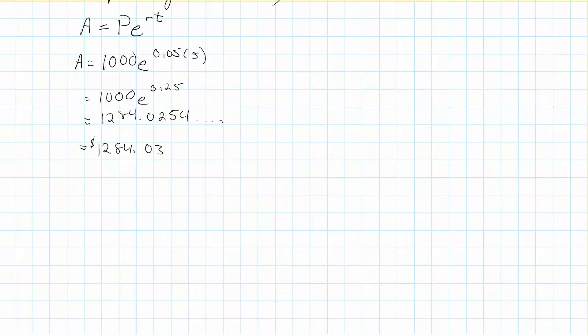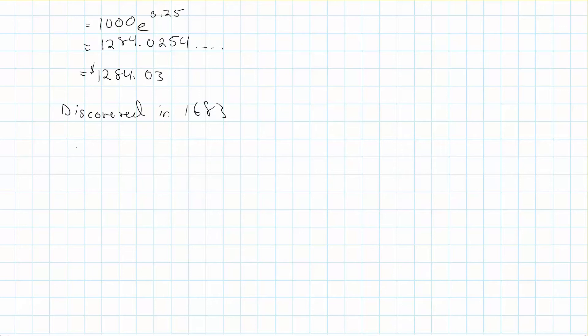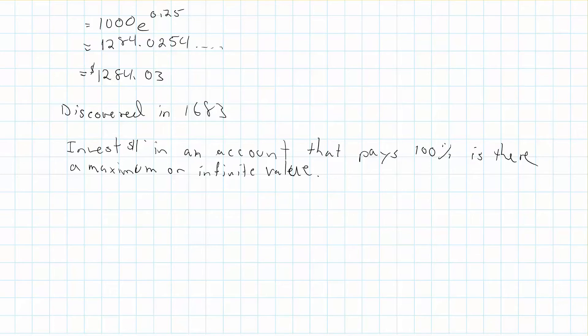e was discovered by Jacob Bernoulli, who is a very famous mathematician. And it was discovered in 1683. So, this number is not exactly new. We've known about this number for quite a while. And the way it was, is there was a question posed. Essentially, if you invest $1 in an account that pays 100% interest, is there a maximum or infinite value?